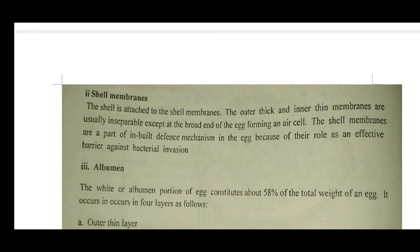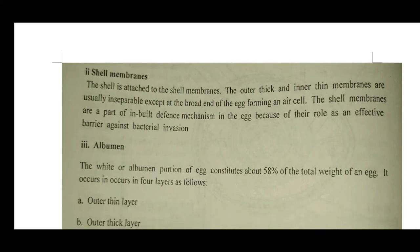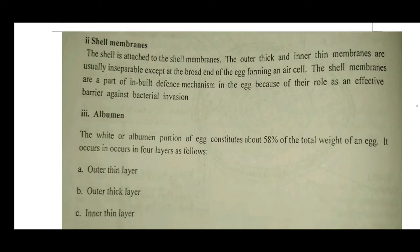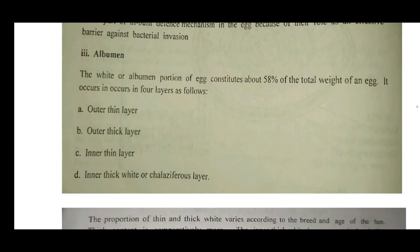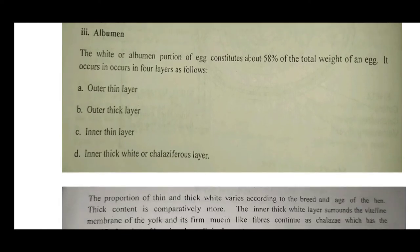The shell membranes are attached to the shell. The outer thick and inner thin membranes are usually inseparable except at the broad end of the egg, where they form an air cell. These shell membranes are part of the immune defense mechanism in the egg, acting as a barrier against bacterial invasion. The albumen or white portion of the egg constitutes about 58% of the total weight.